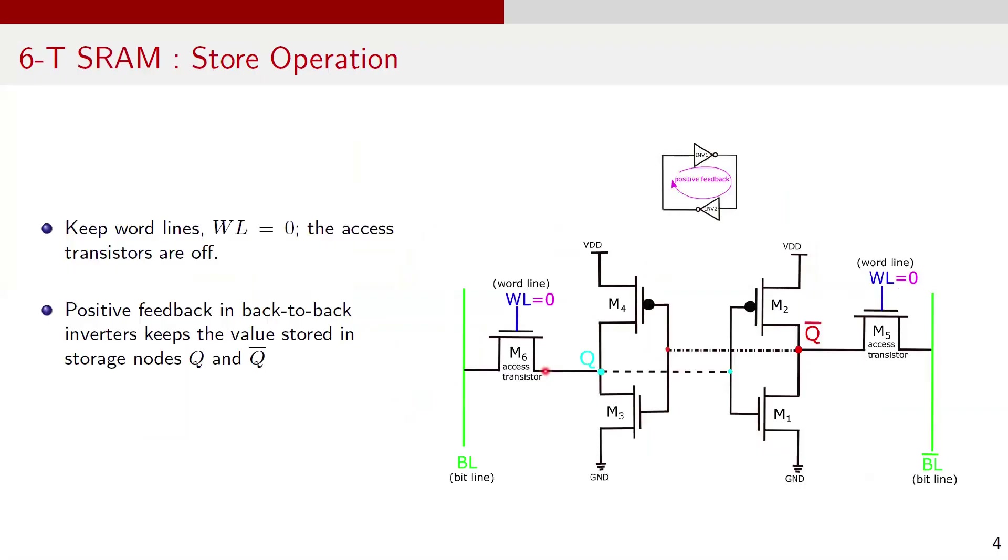Now let's discuss the mechanism to store, read and write data in an SRAM cell. First, the store operation. During the store operation, we keep the wordline WL at 0.